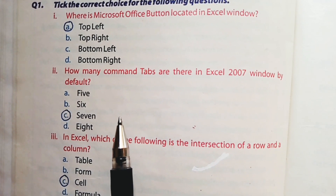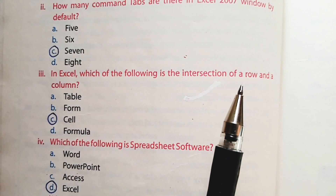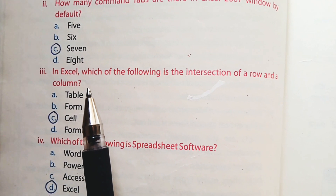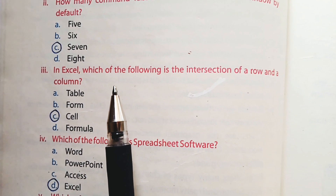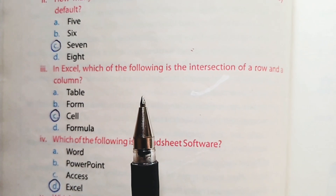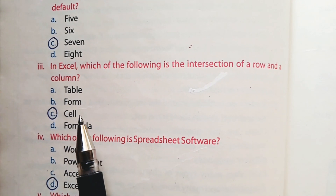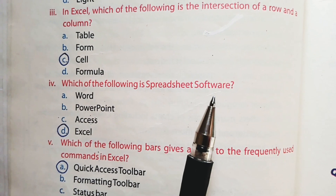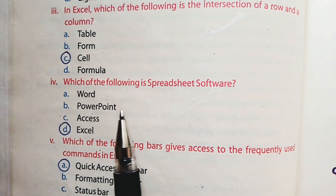Part number 3: In Excel, which of the following is the intersection of a row and a column? We have discussed the topic 'Elements of a Worksheet' — rows and columns intersect to form cells. Option C is the right option: cell. Part number 4: Which of the following is a spreadsheet software? Option D is the right option — MS Excel is a spreadsheet software.